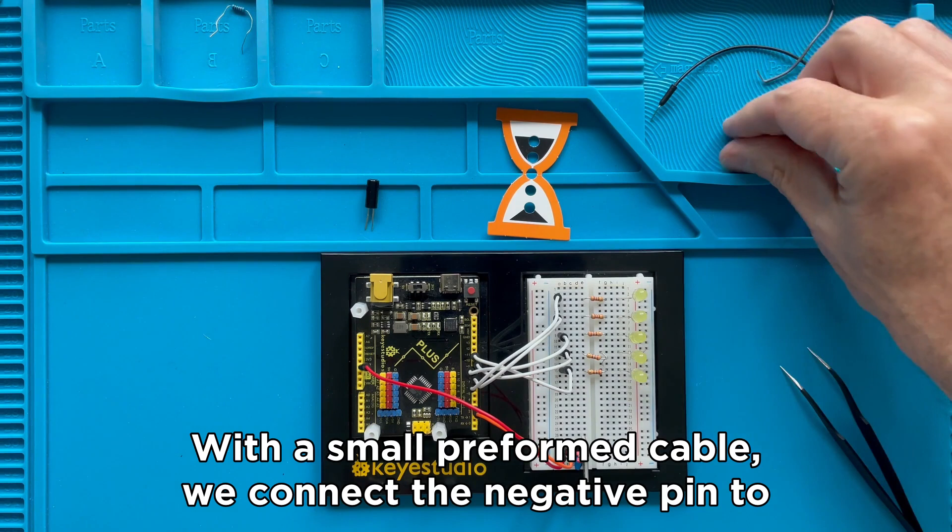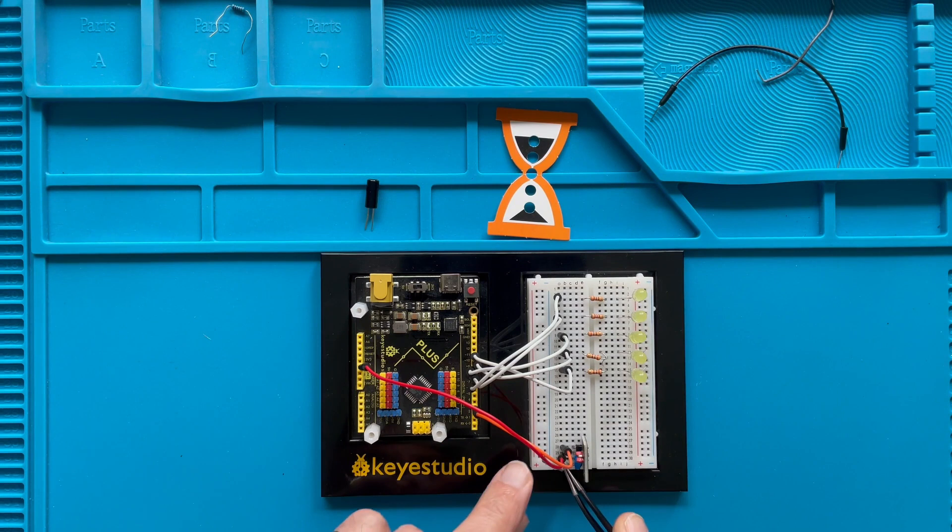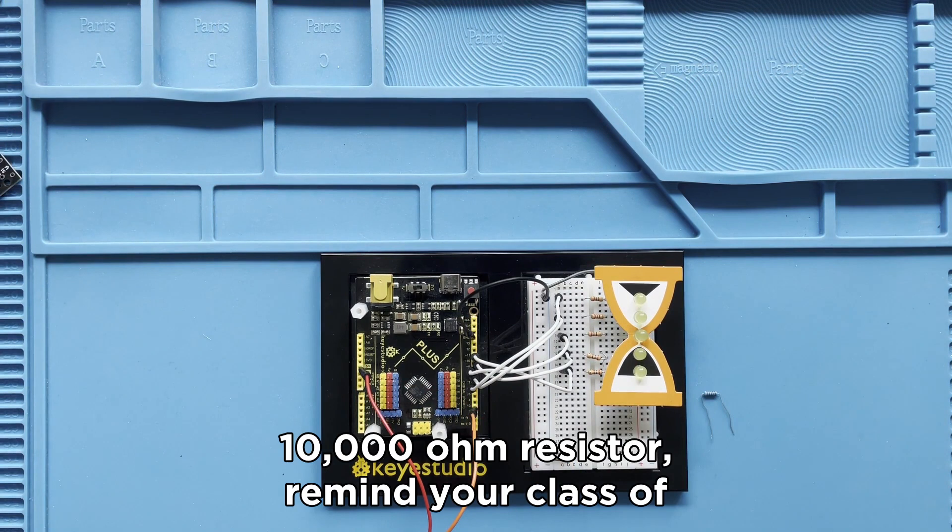When installing a separate switch with the 10,000 ohm pull-up resistor, remind your class of the previous lesson. The listening pin has to be connected between the pull-up resistor and the tilt switch.